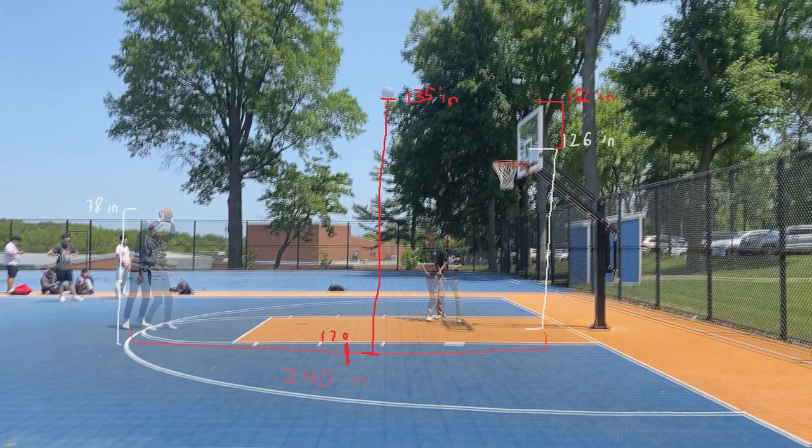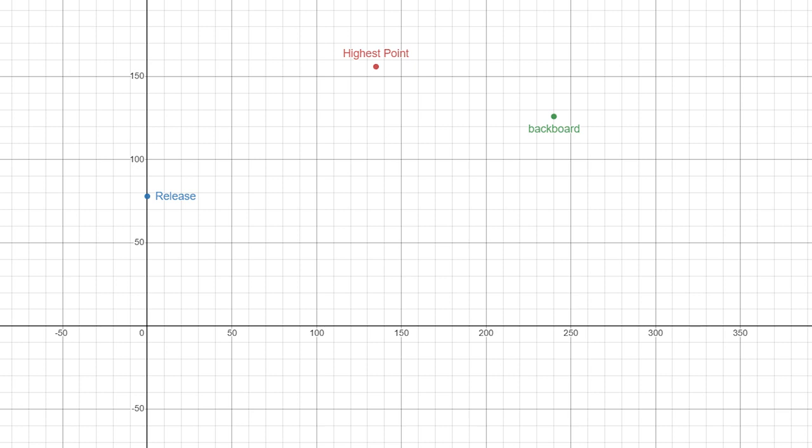We put it into Desmos and see that if we plot the release, highest point, and backboard shots, it does not really look like a quadratic. This may be due to inconsistencies in measurement or we just got bad data.